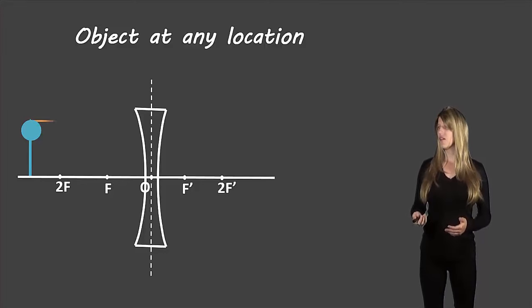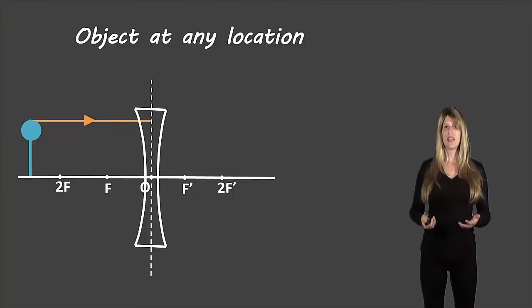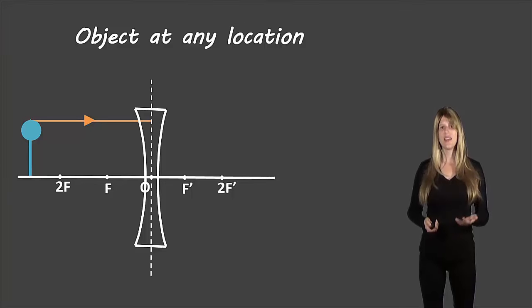So for our first rule, if we have an incident light ray traveling parallel to the principal axis, it's going to start at the top of the balloon there, travel parallel to the principal axis, and it's going to refract as if it had come from the focus.